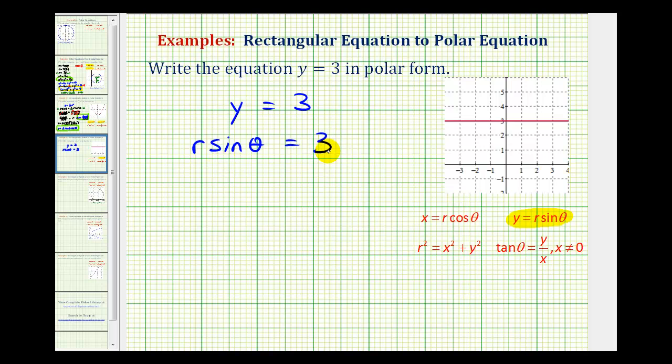And now we want to solve our polar equation for r. So we'll divide both sides of the equation by sine theta. This simplifies to 1. So we're left with r equals 3 divided by sine theta, which would be a polar equation for y equals 3.